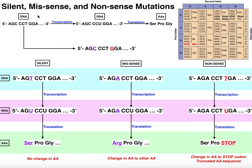The first thing I want to do is focus on this DNA segment right here. This is just a small segment of a larger gene, and I have triplet nucleotides here: AGC, CCT, and GGA — and then it would go on and on. It's much longer than this; I'm just showing you three.